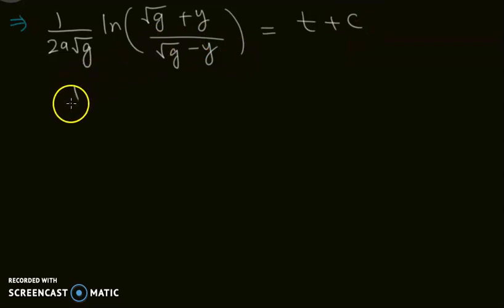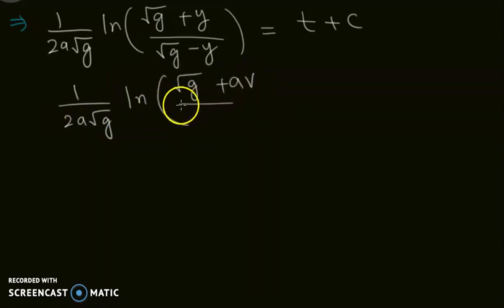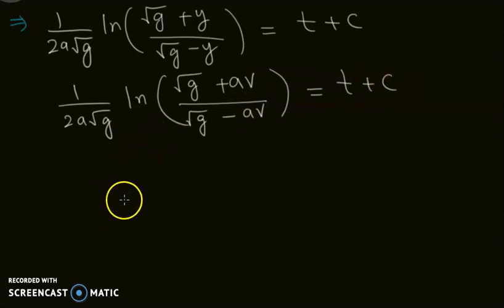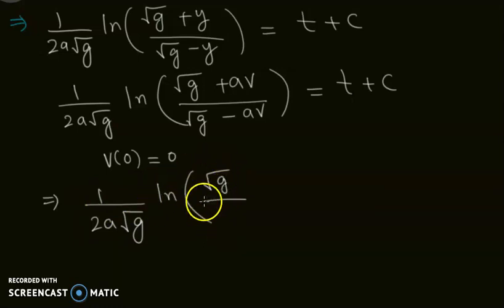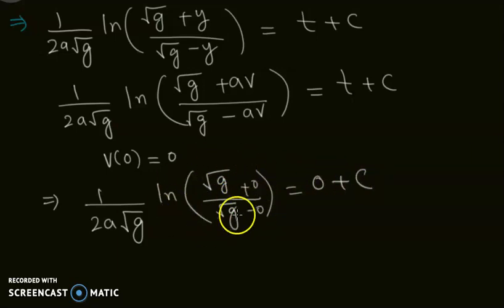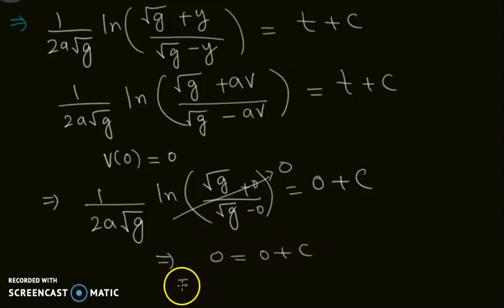We also know that v(0) = 0. Substituting this initial condition gives (1/(2a√g)) · ln(√g / √g) = 0 + c. The argument of the logarithm becomes 1, so ln(1) = 0, which gives 0 = 0 + c. Therefore c = 0.